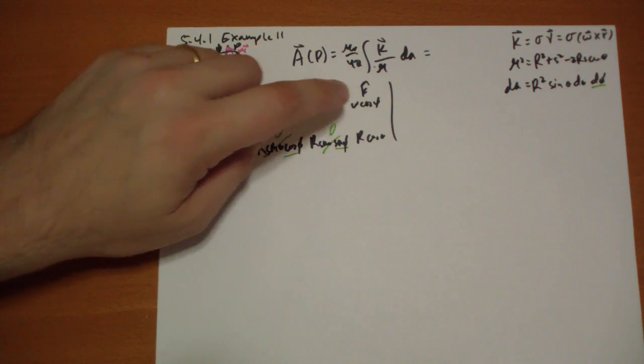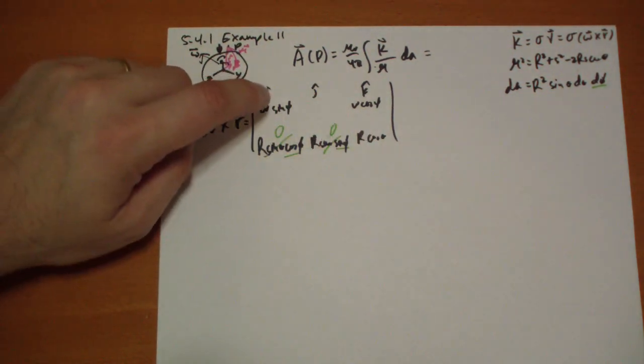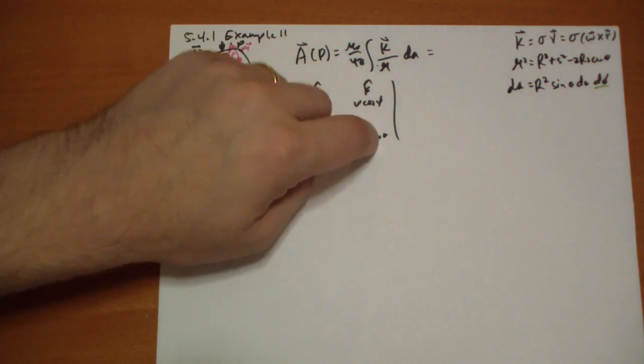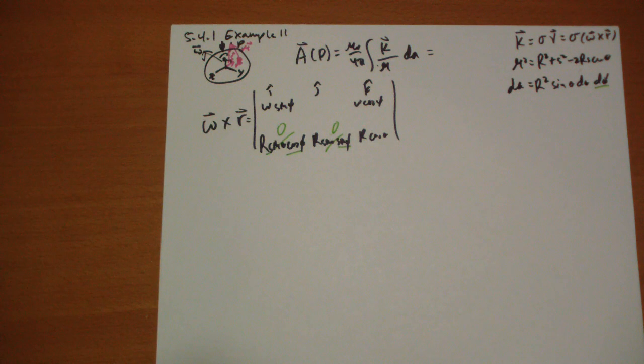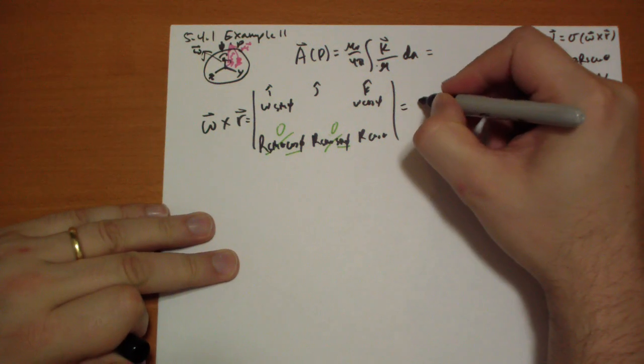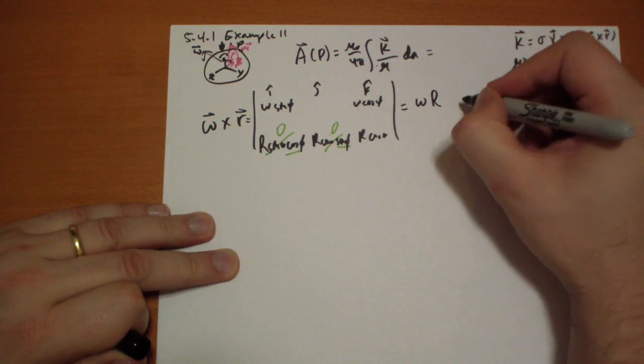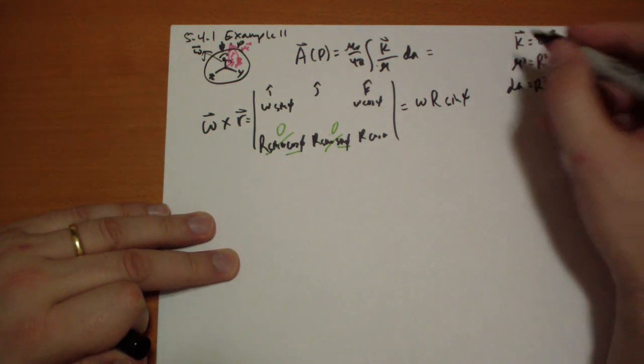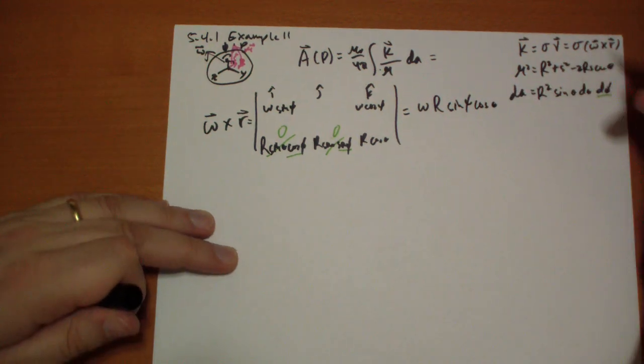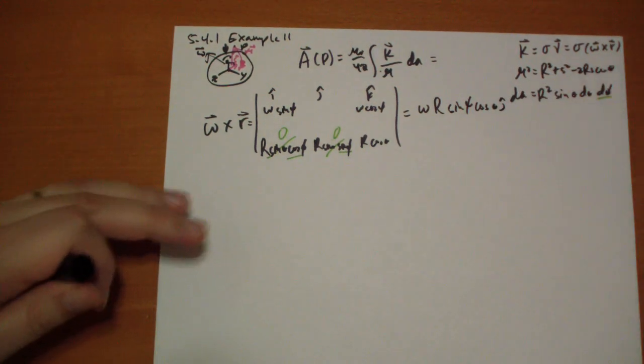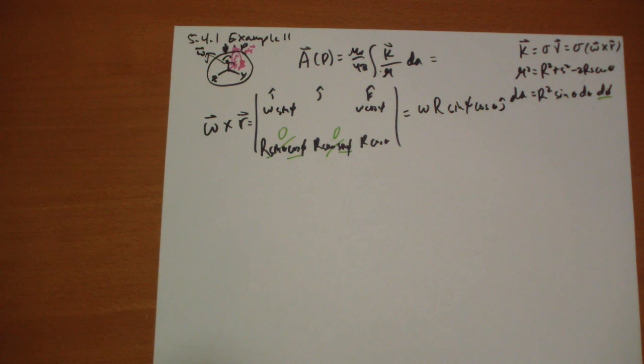So the only surviving component of the cross product is this J hat component. And that's going to be this minus that. So we get omega sine C times R cosine theta. So this is going to be equal to omega sine phi cos theta in the J hat direction. The other components don't matter.